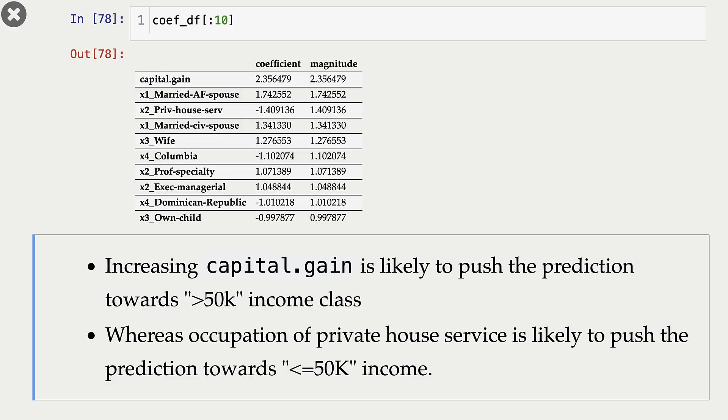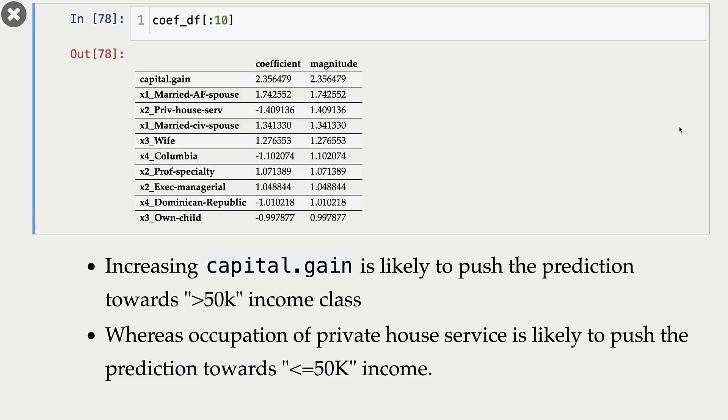Can we get feature importances for non-linear models? We saw that models such as LightGBM or XGBoost or random forest give us better scores than logistic regression, for instance. So can we actually get feature importances from these more accurate models?